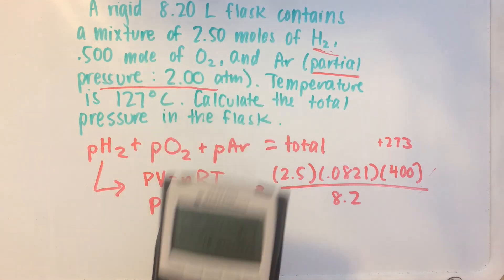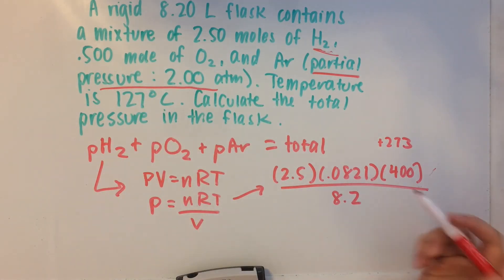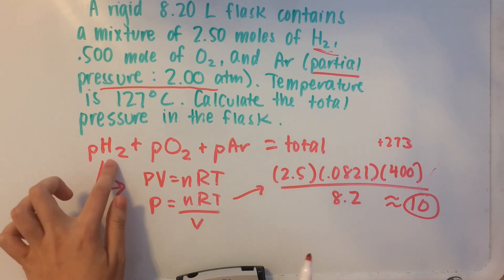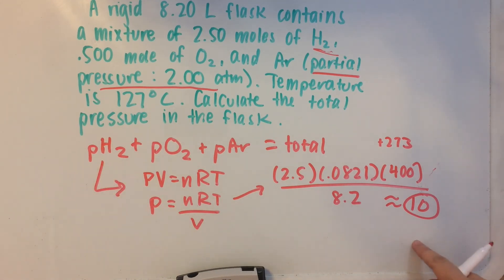So we have 2.5 times 0.0821 times 400 over 8.2, which is basically 10. Okay, so the partial pressure of H2 we found out is 10 atmospheres.